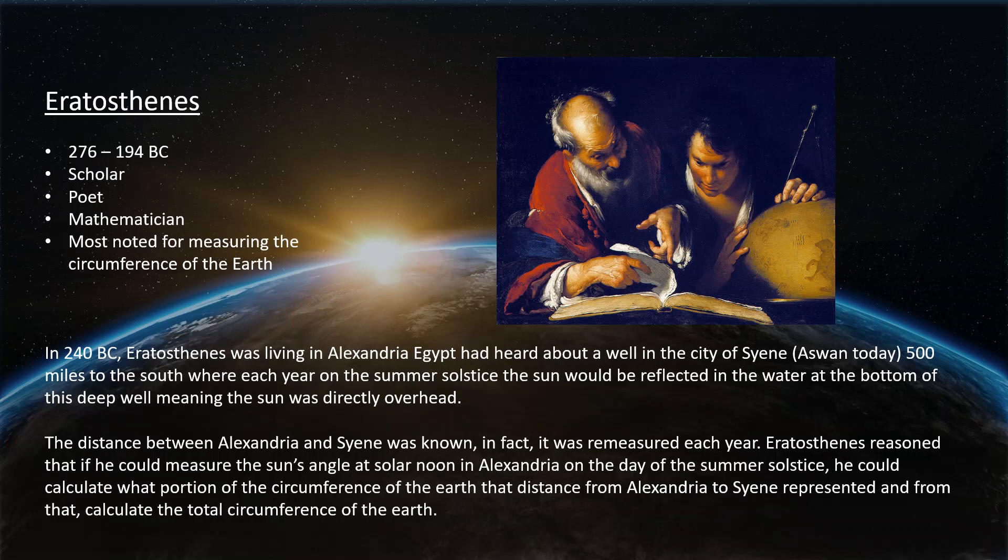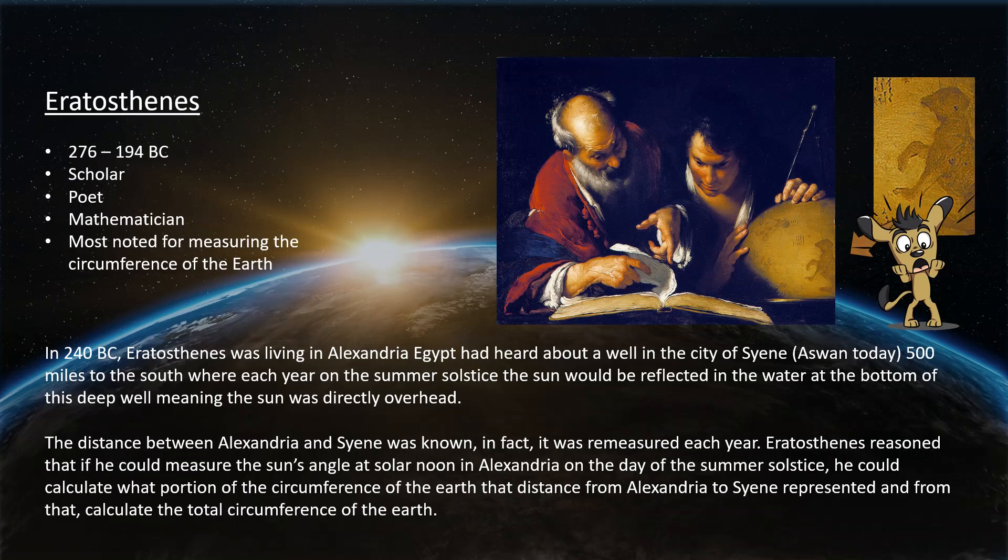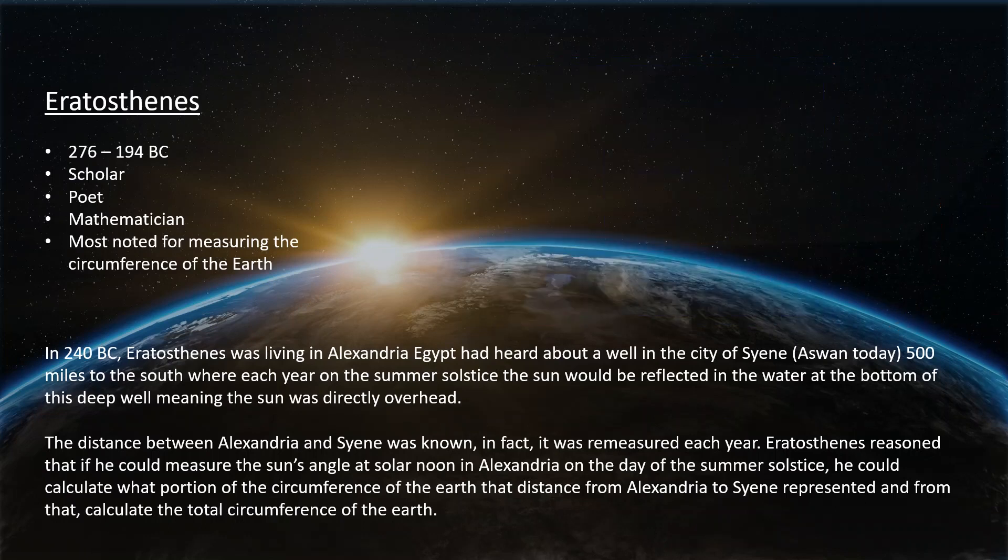That's Eratosthenes you see there on the right, the guy in the red bathrobe, and there's a guy in the blue bathrobe. We don't really know who he is, and they're looking at a globe, and I'm pretty sure that's a dog on that globe. That's computer-generated imagery for you.